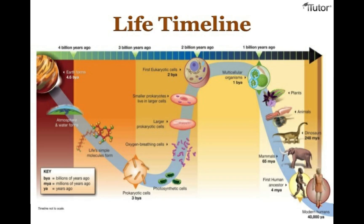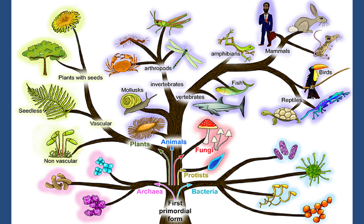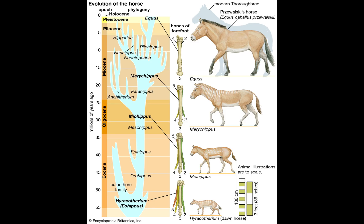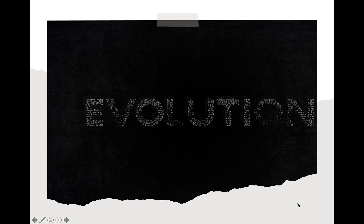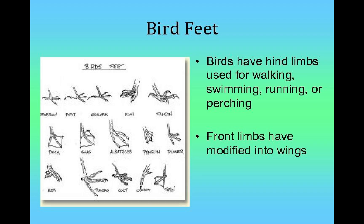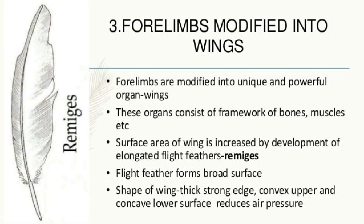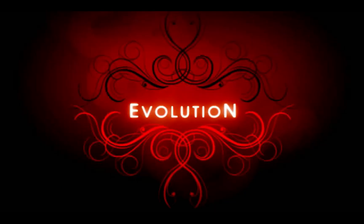All present-day life forms have descended from and are related to those that lived in the past. All present-day life forms may look different from those they have descended from, because they became modified — they changed from one generation to another. That process of change is called evolution.